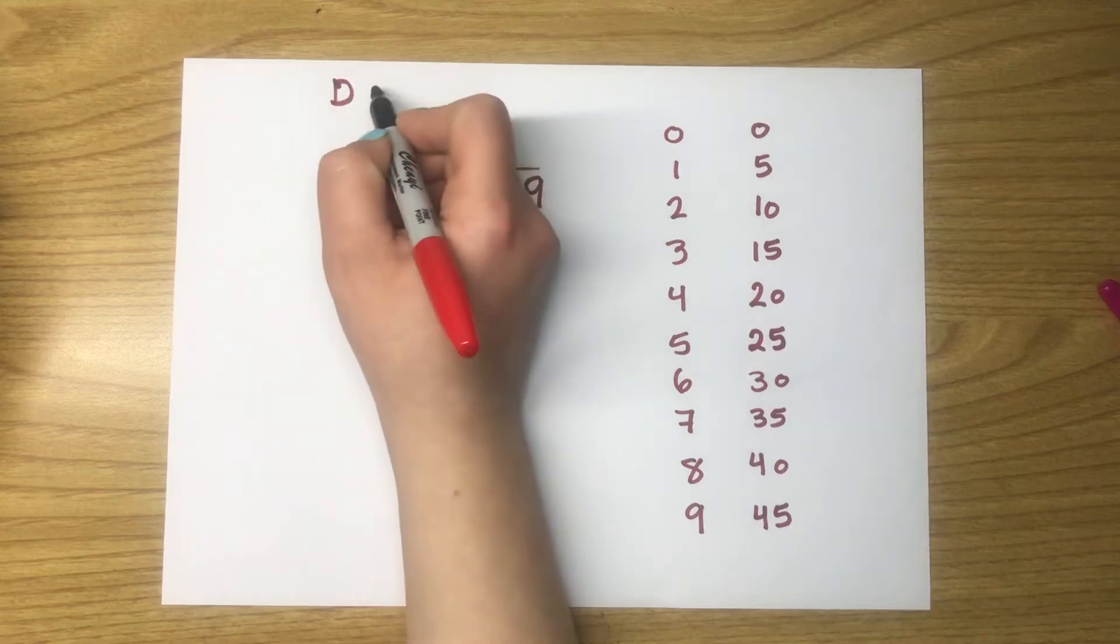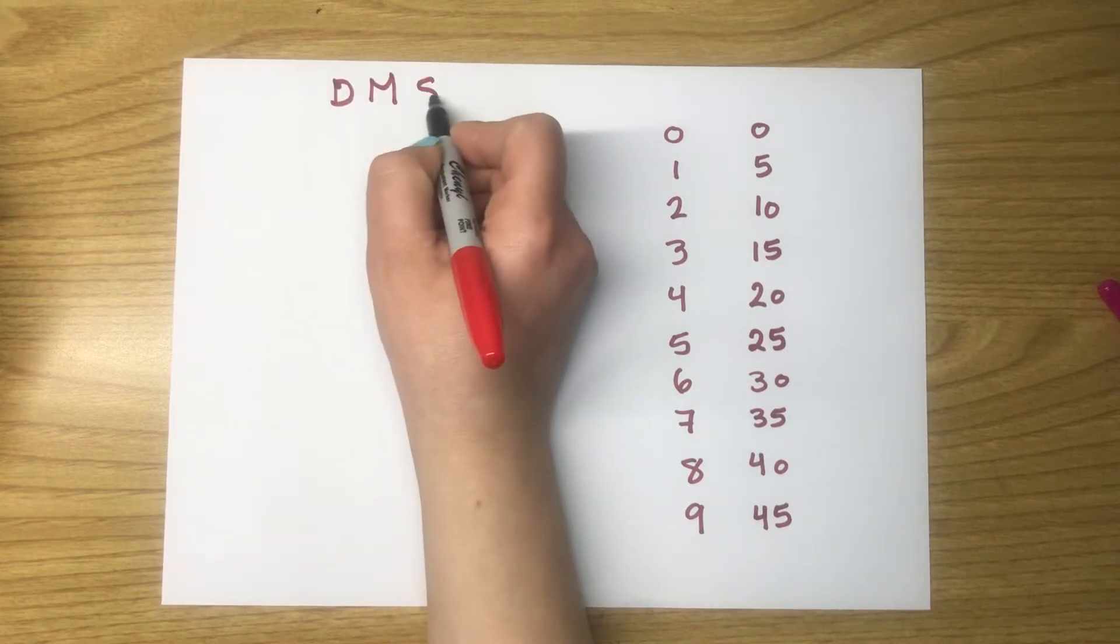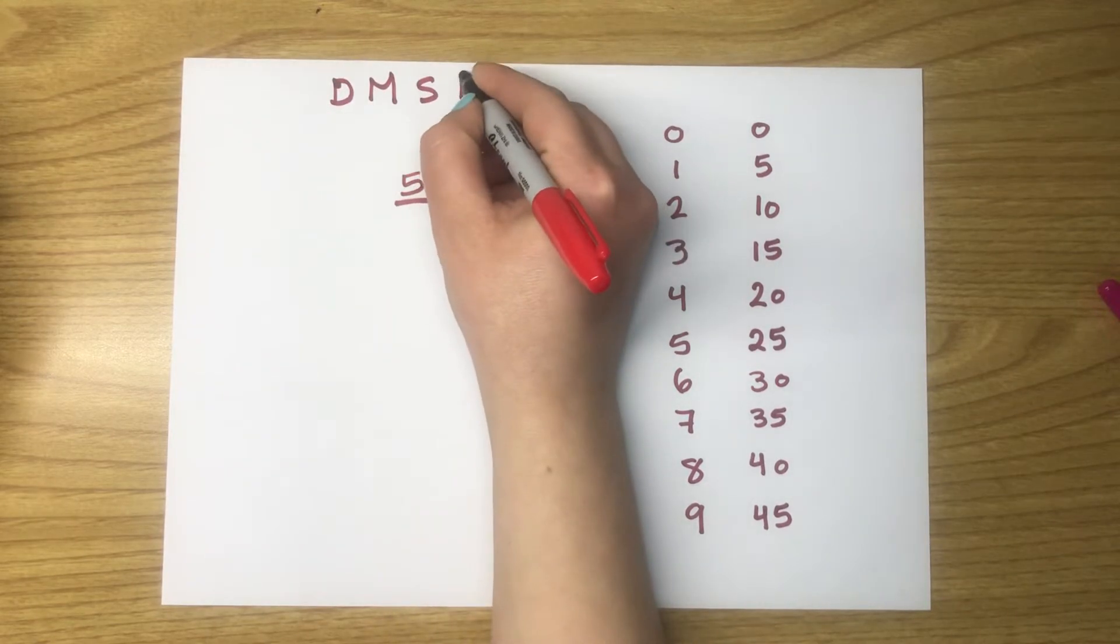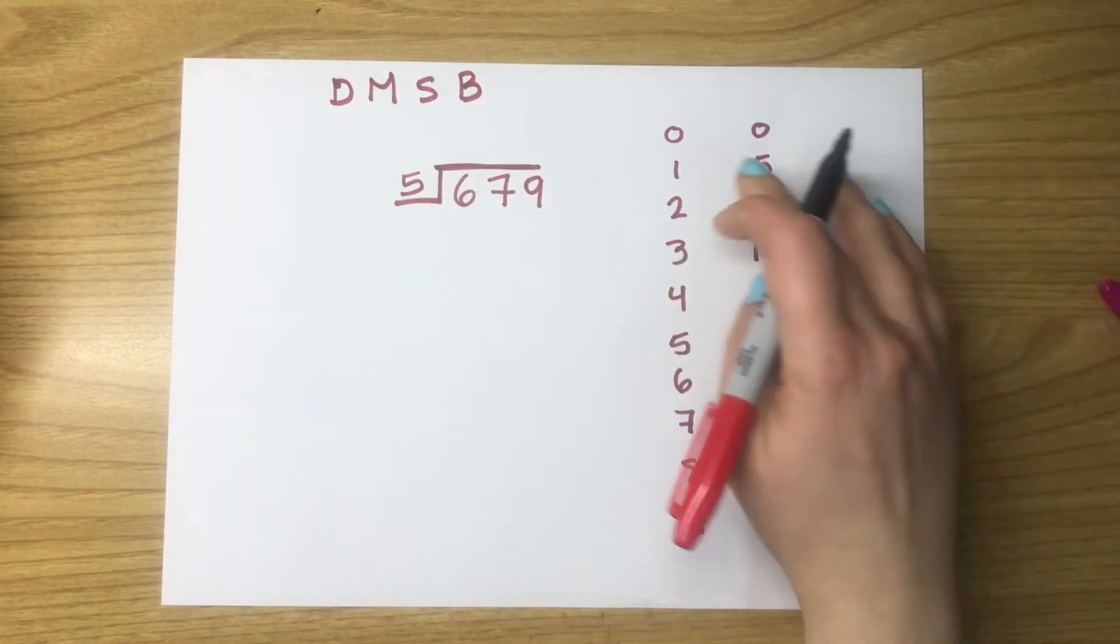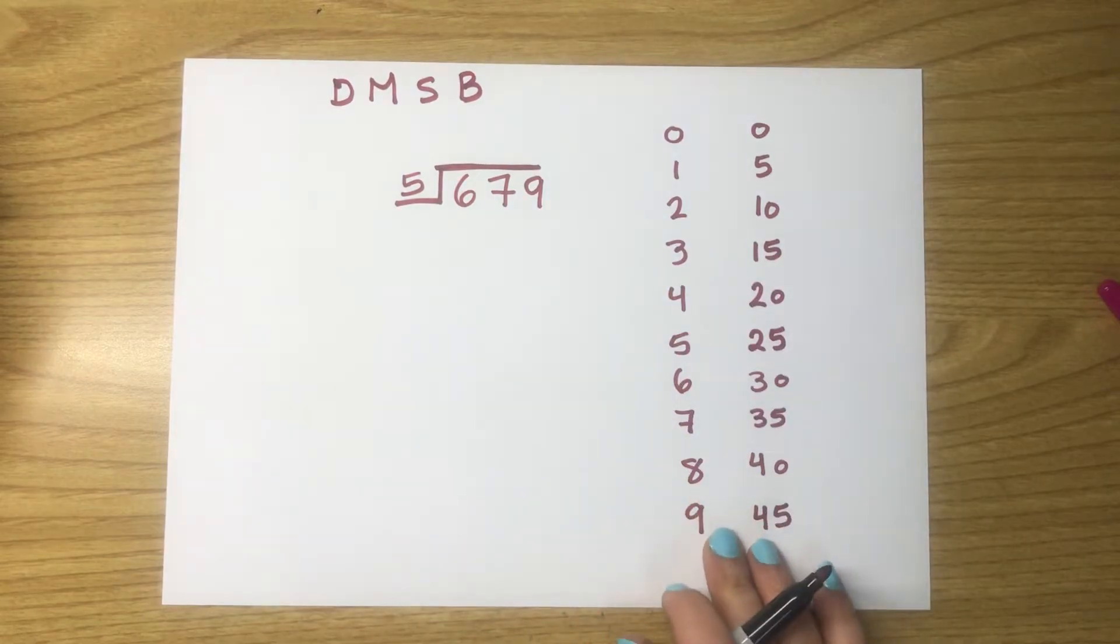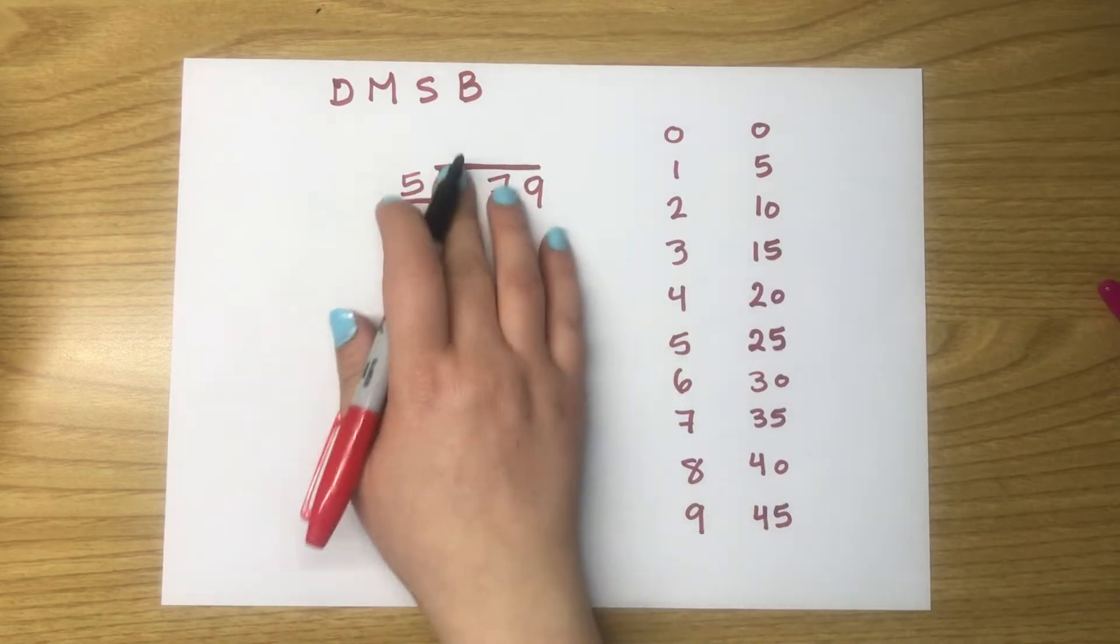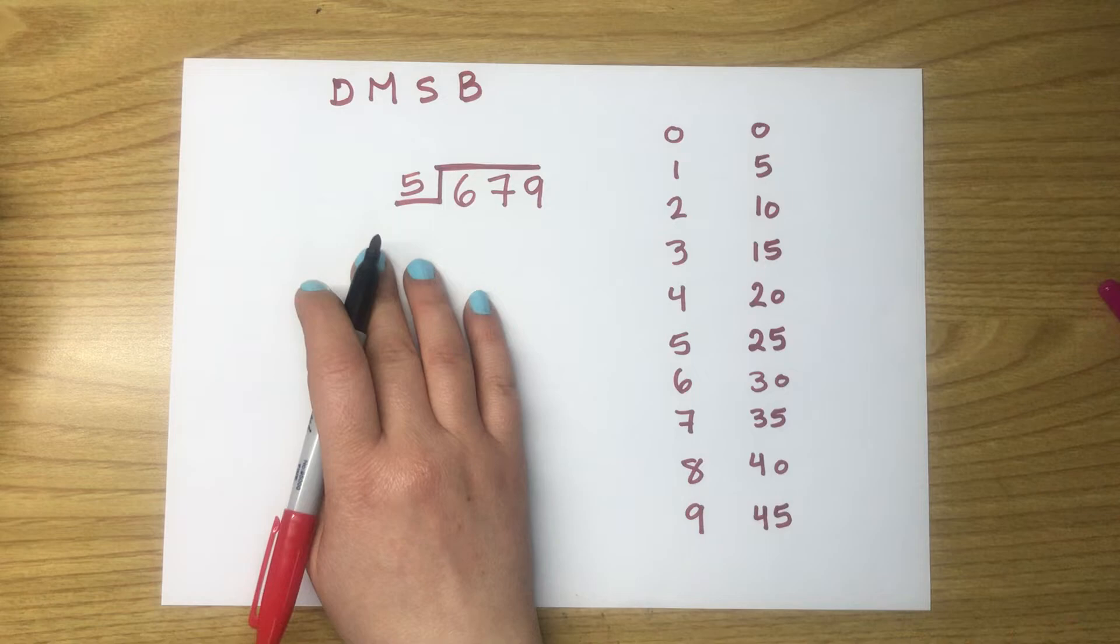Divide, multiply, subtract, and then bring down. Actually, writing down this timetable will help us doing the division process very fast and without hesitating.